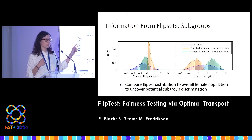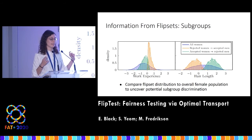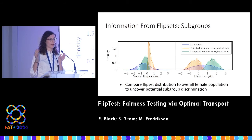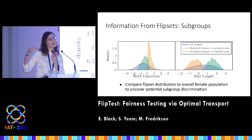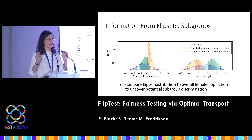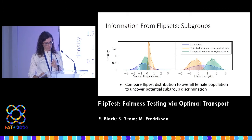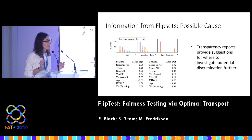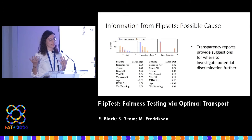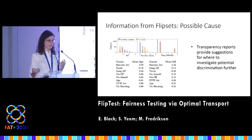The blue is the overall distribution of women, whereas the orange and green are distributions of the flip set — the women who are either hired as women and not as men, or not hired as women but hired as men. You can see that their distributions differ significantly on these features. Another piece of information we can gather from the flip sets is a possible cause of discrimination.